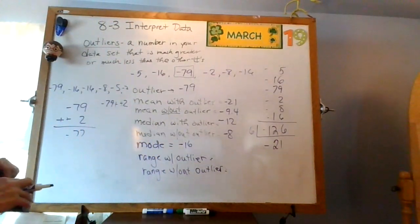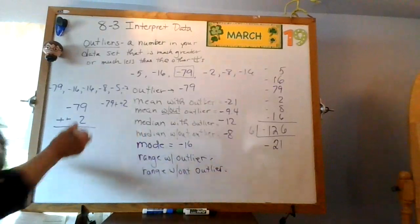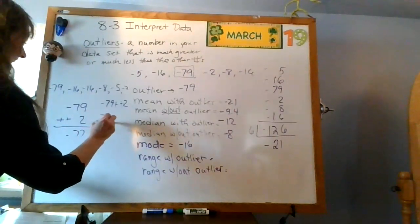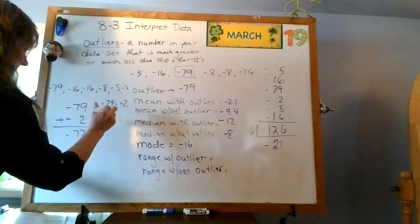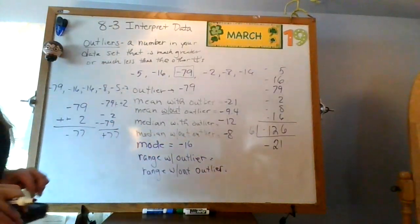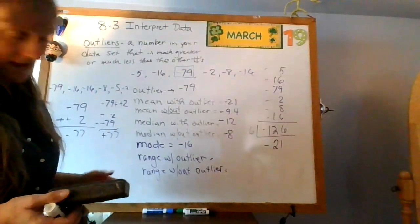So I can think about this. Now, I could have done negative 2 minus a negative 79. And that would give me a positive 77. Either of those answers really is okay.